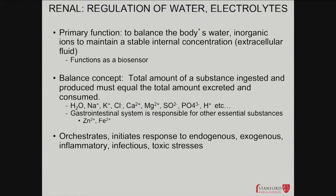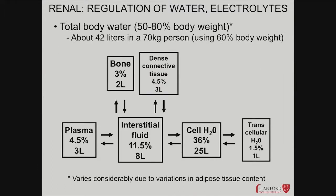It's good to look at the big picture of what volumes we're talking about. Total body water, as you probably know, is about two-thirds of your body weight — 50 to 80 percent. So a 70 kilogram person has about 42 liters of water. Some of it's in the blood, but that's actually a relatively small proportion. A lot of it is sloshing around in between the outside of cells and the blood vessels — that's called interstitial fluid. And then a great deal of it is actually inside the cells.